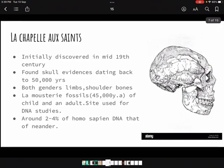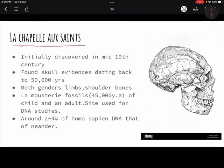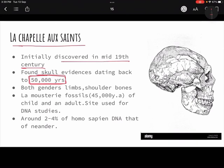Neanderthals were initially discovered in the mid-19th century. Fossils found at some sites date to around 50,000 years ago — which is quite recent in evolutionary terms. Importantly, we are finding more complete skeletons from this period, including limbs of both genders and shoulder bones, because the fossils are not as old as those from 20 lakh years ago.